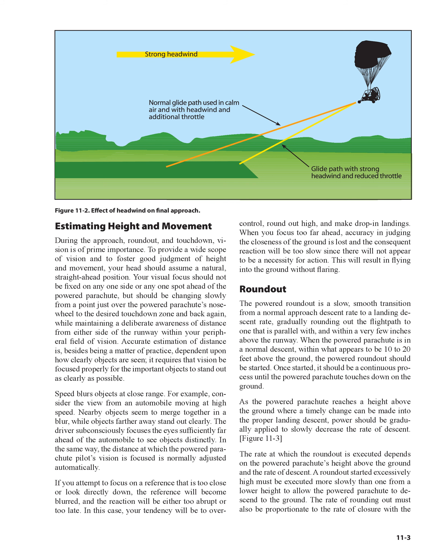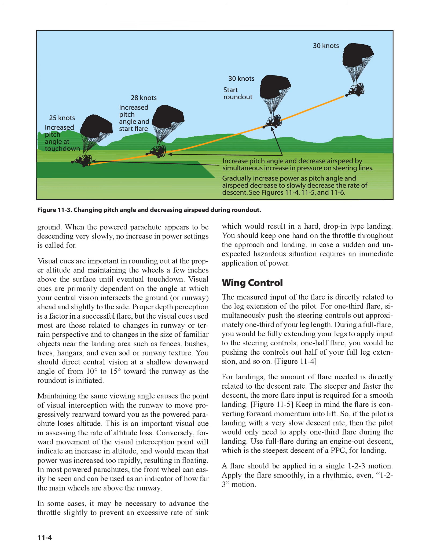As the powered parachute reaches a height above the ground where a timely change can be made into the proper landing descent, power should be gradually applied to slowly decrease the rate of descent (Figure 11-3). The rate at which the roundout is executed depends on the powered parachute's height above the ground and the rate of descent. A roundout started excessively high must be executed more slowly than one from a lower height to allow the powered parachute to descend to the ground. The rate of rounding out must also be proportionate to the rate of closure with the ground.